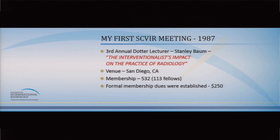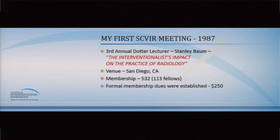At that meeting, the crucial decision was made to open up the membership and evolve from what was formerly a club to a true professional society. I then thought back on my first SCVIR meeting in 1987, when the third annual Dotter Lecture was given by Stanley Baum. Stan talked about the interventionalist's impact on the practice of radiology. That year the meeting was in San Diego, and the membership had grown to 532 members — more than 500 in just two years. That was also the first meeting where a formal membership dues structure was established.